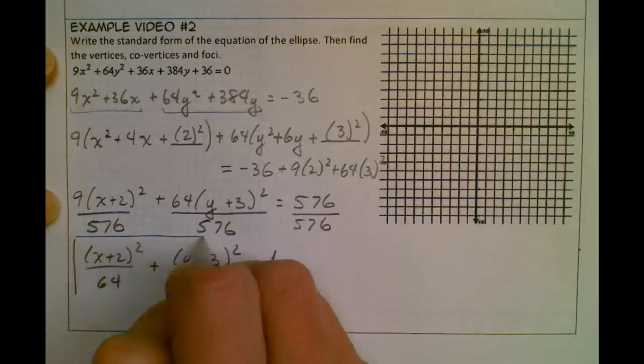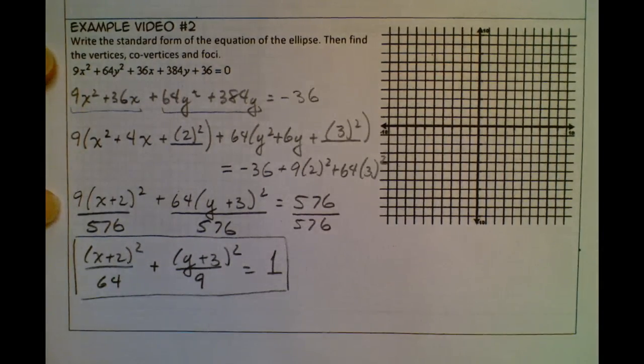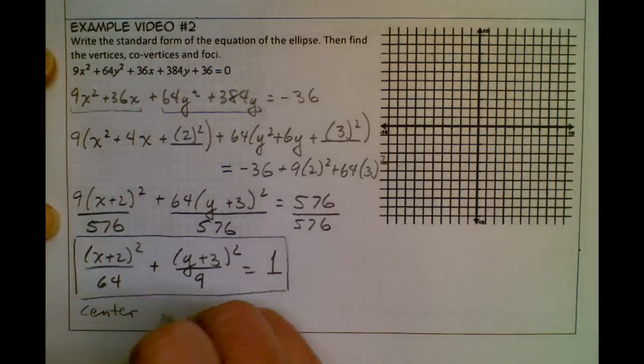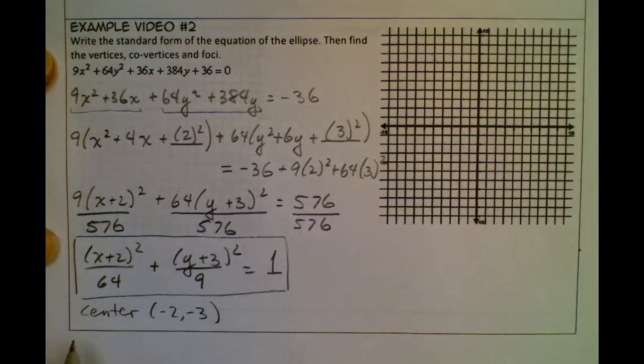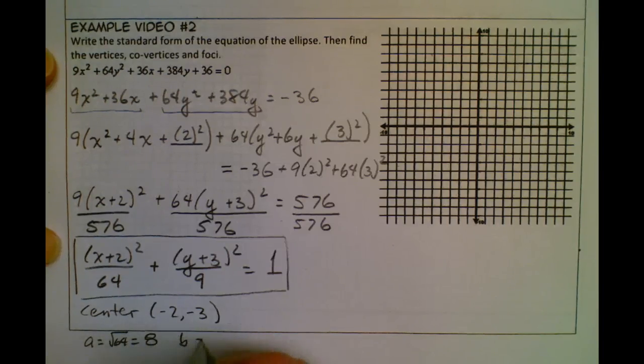So here's our standard form, and from that we can find our center. So our center is going to be (-2, -3). I can find a, I know a is always the larger one, so this is going to be my a², so if I take the square root of that, a is going to be the square root of 64, which is 8.